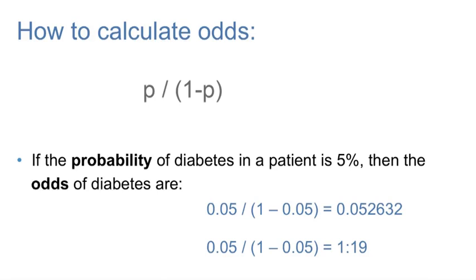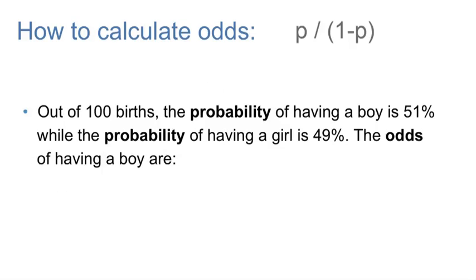Let's try a third example. Out of 100 births, the probability of having a boy is 51%, while the probability of having a girl is 49%. So to calculate the odds, you would take p, which is 51, and divide it by the probability of having a girl, which is 1 minus p, or 49. And this gives you the odds of 1.04.